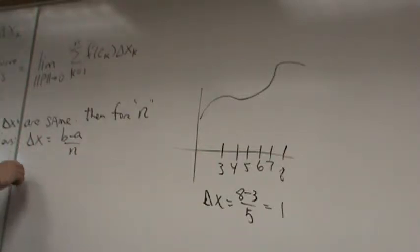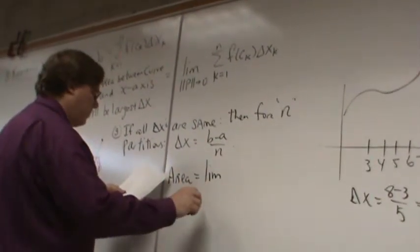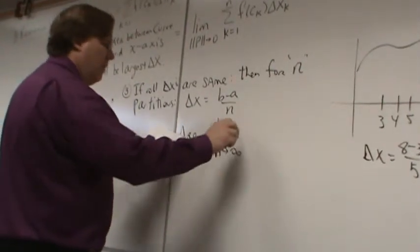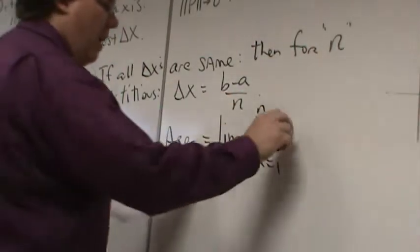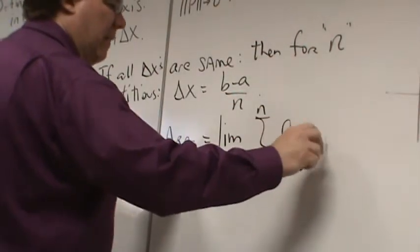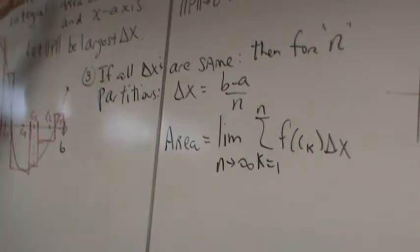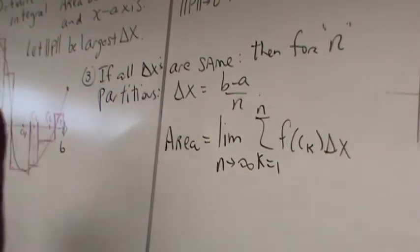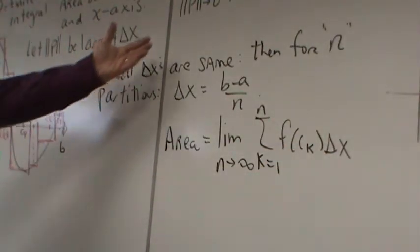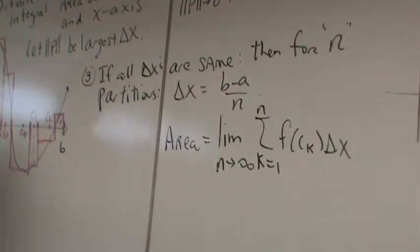So this area ends up becoming the limit as n approaches infinity of the sum as k equals 1 to n of f of C sub k times delta x. Now I don't have to distinguish between bigger and smaller partitions. All my delta x's are the same, so I can just say delta x, and instead of saying I want the smallest partition to go to zero, I'll just say I want an infinite number of partitions.